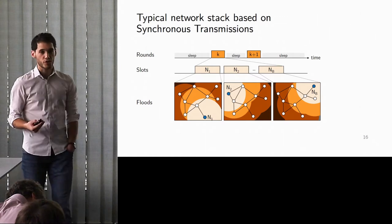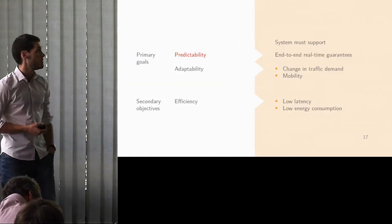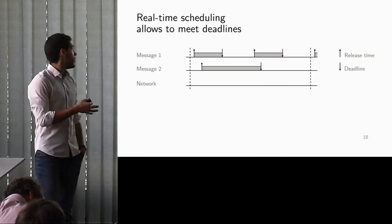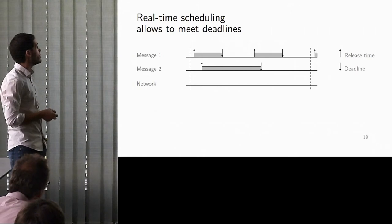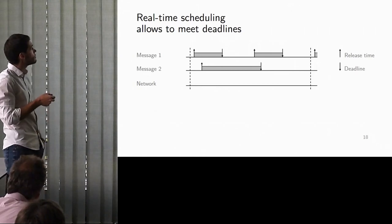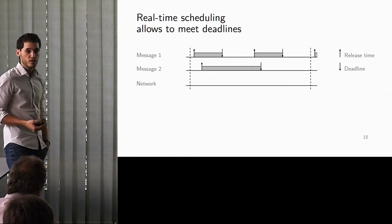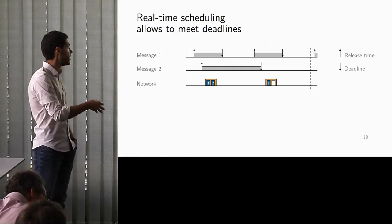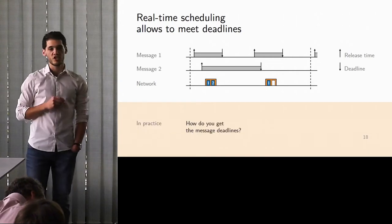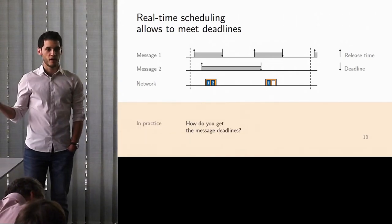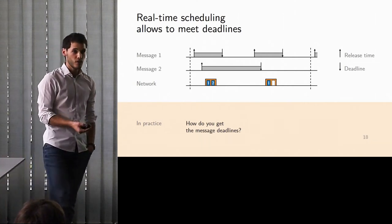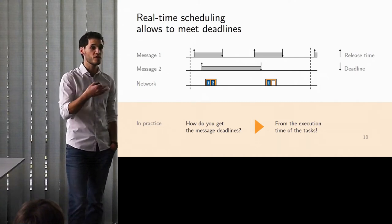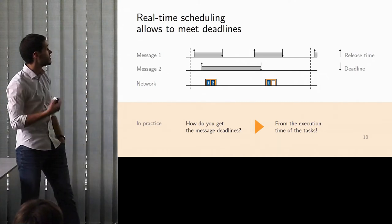Now, on top of the structure, how do you get predictability? Well, if you want to meet deadlines, you need to use real-time scheduling. What does real-time scheduling for communication look like? You're going to have some messages with release times and deadlines. You can analyze your system, and then schedule your rounds, and then assign the messages to the round. But how do you get the message deadlines? Or the release times. You get them once you know when your tasks are being executed.